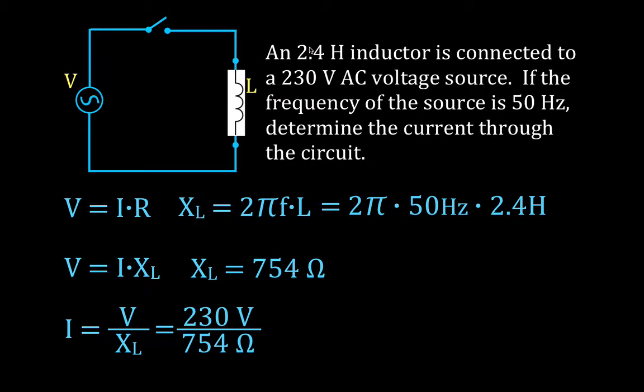Substitute the values in, voltage 230, reactance of the inductor is 754 ohms. And therefore the current is 0.31 amperes. Okay, that's all there is to it. Ohm's law, pretty straightforward.